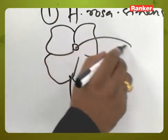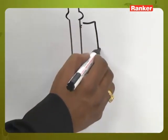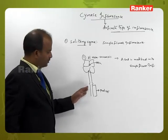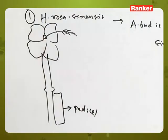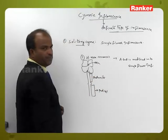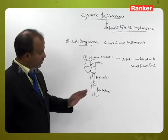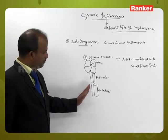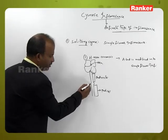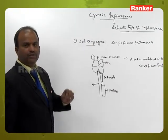In the rough diagram of Hibiscus rosa sinensis, the stalk is divided into two parts. The lower basal portion is called the pedestal, and the upper half above the pedestal is called the peduncle. These two parts can be identified by an articulation between them. This is the solitary cyme in Hibiscus rosa sinensis.